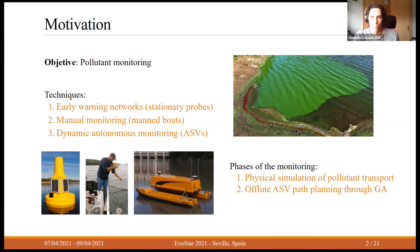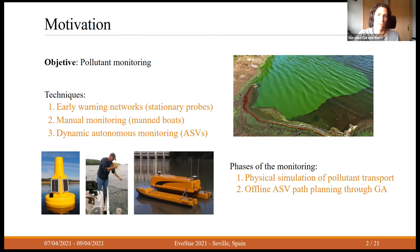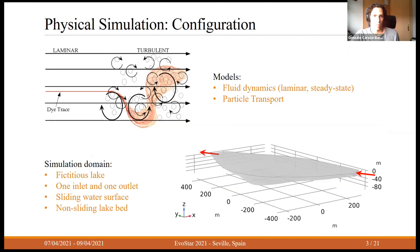This project is divided into two phases. In the first, we perform a physical simulation of contaminant transport to know where the pollutants are and where they will be over time. In the second phase, we implement an offline ASV path planning using a genetic algorithm, whose objective is to plan a path able to find as many particles as possible.